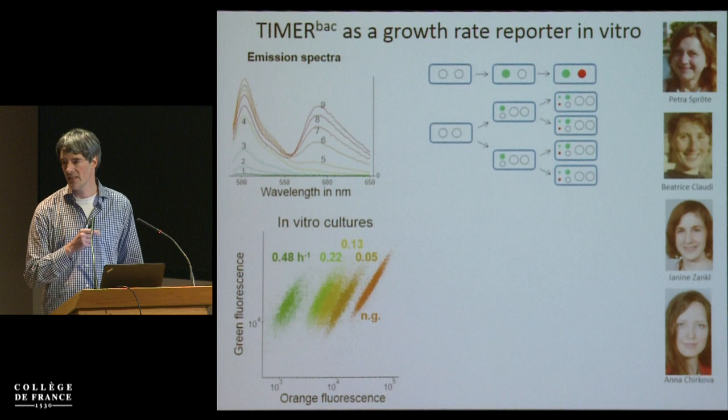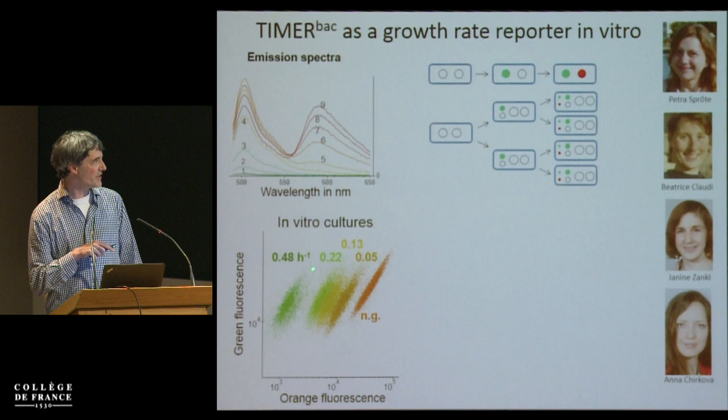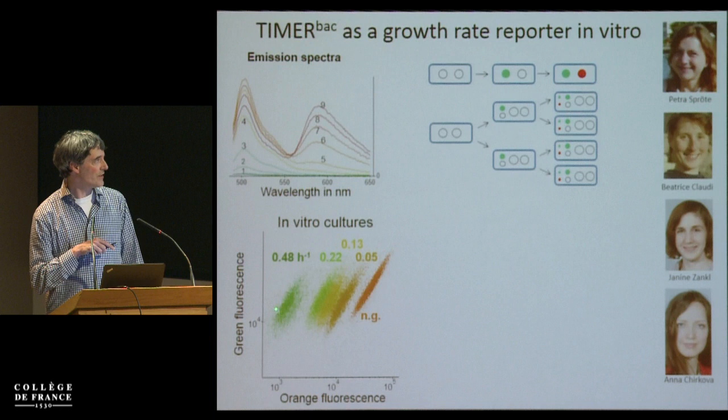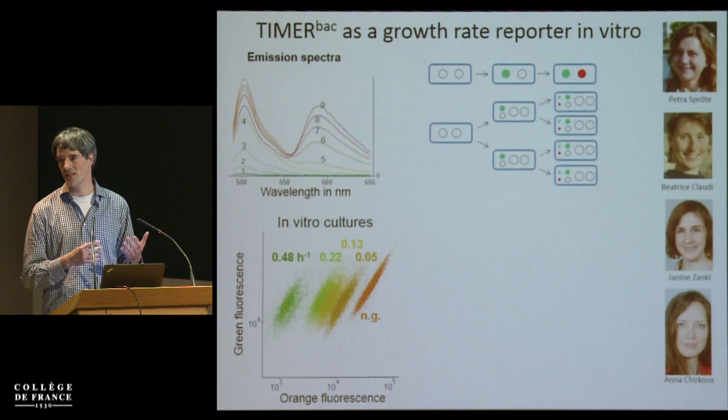We confirmed this in vitro in chemostats where you can define the growth rate precisely. At about a two-hour generation time, many bacteria have nice green fluorescence but very little orange fluorescence. However, if they divide only once in 20 hours, they still have nice green fluorescence but now much more orange fluorescence. So we really have a color indicator for growth rate.